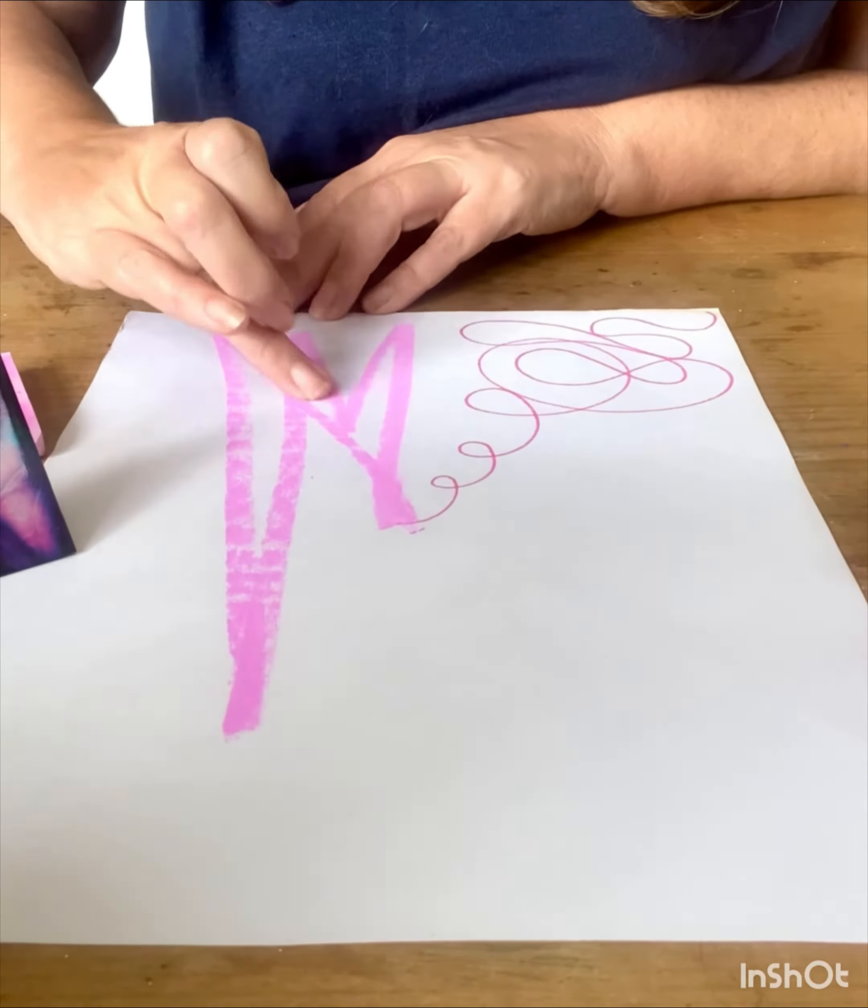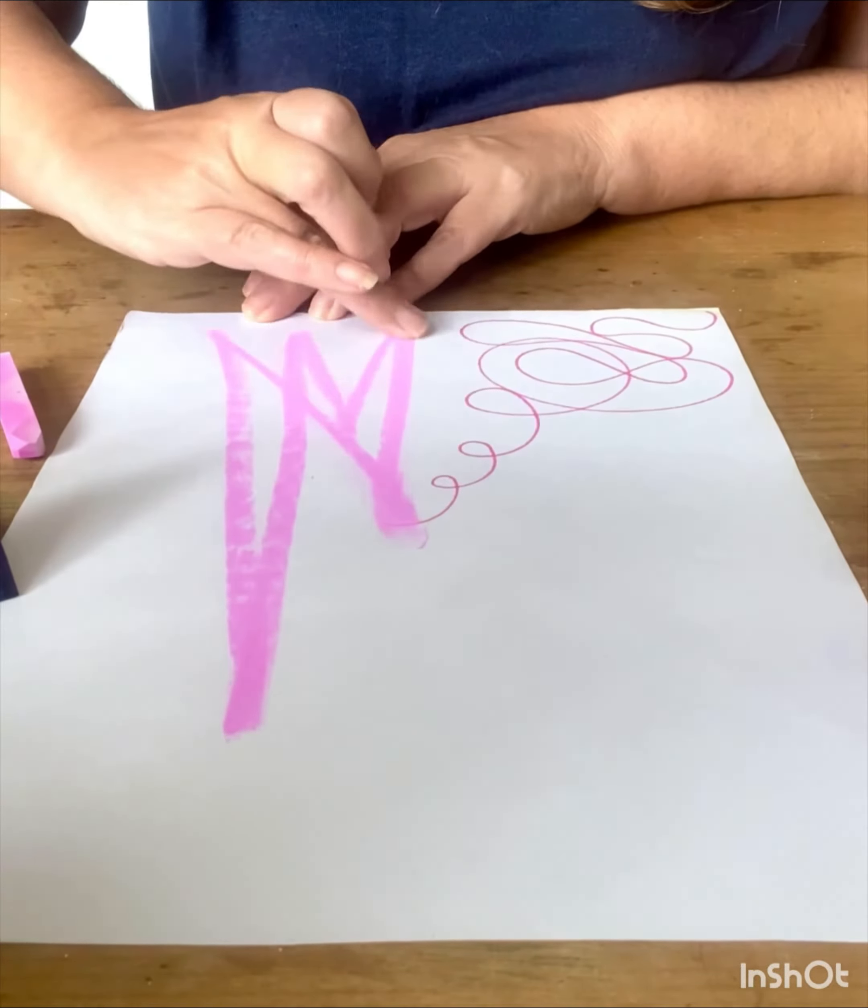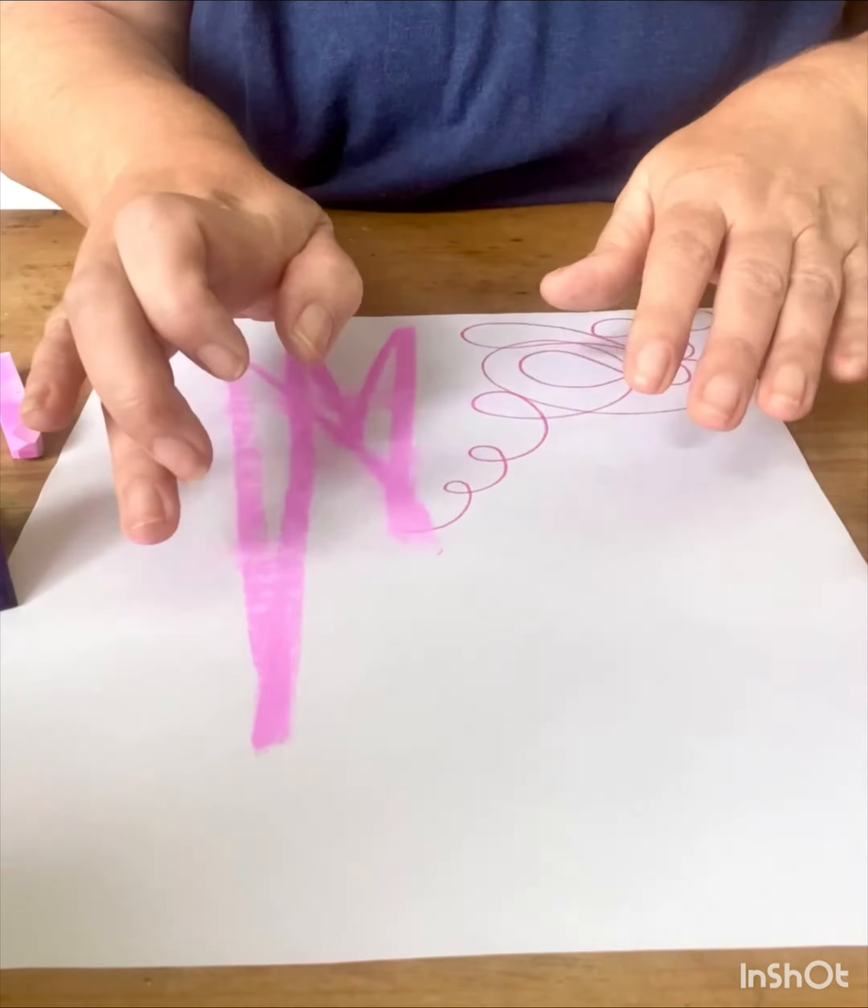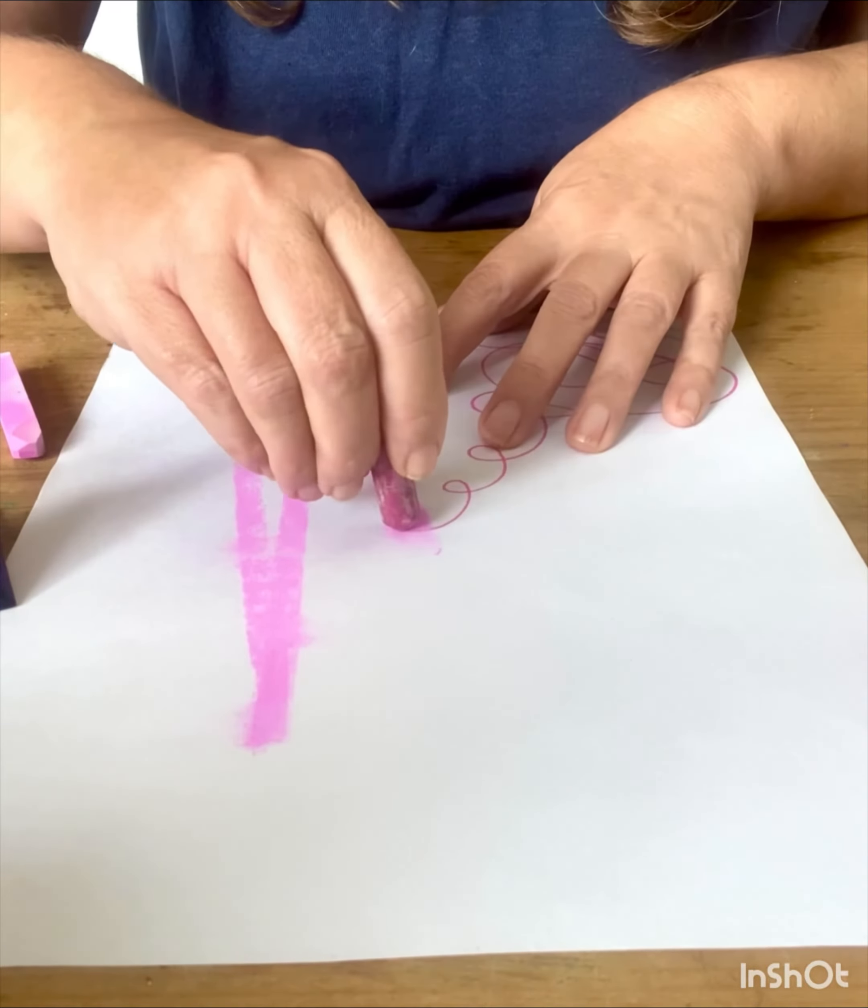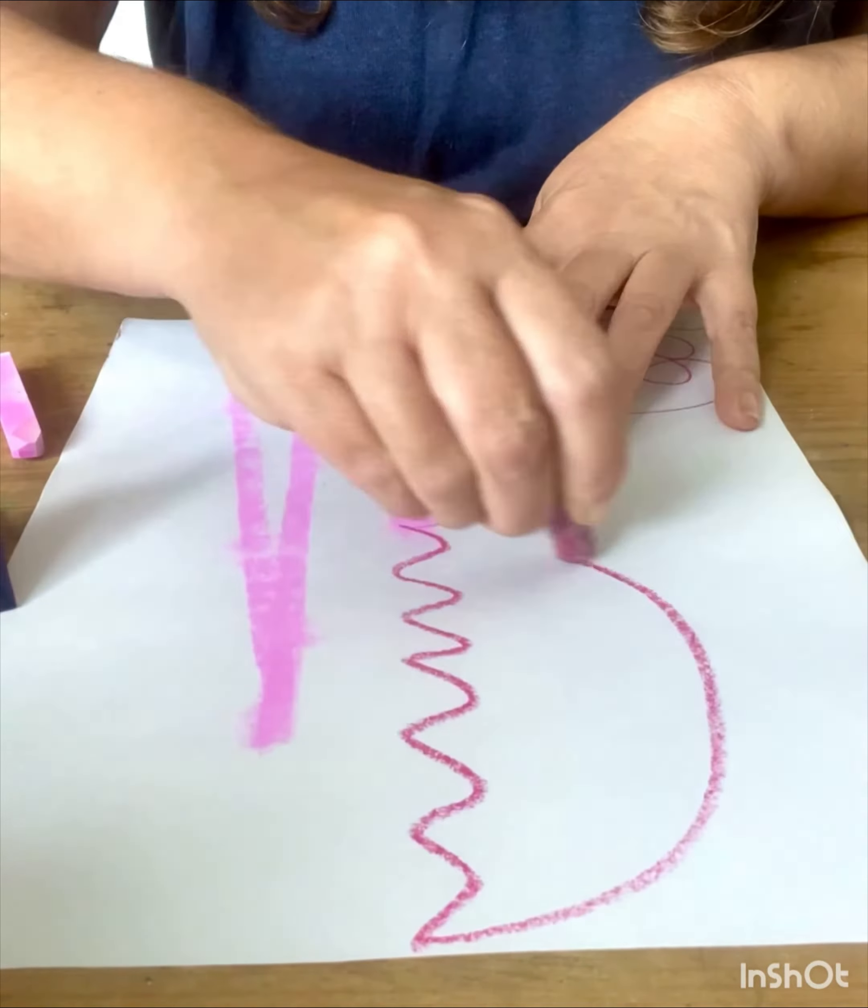And then the chalk pastel wanted to be smudged and spread around in all different ways. This way, that way, this way, that way. And then the soft pastel came along and it started in the middle and wanted to go all the way up in a wiggly line and a big circle.